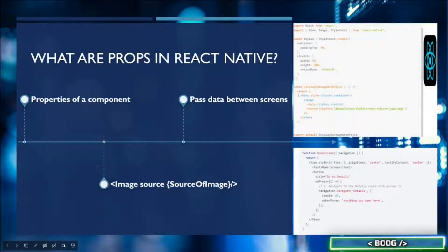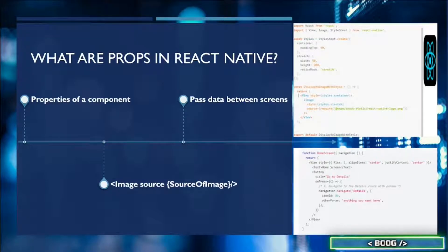What are props in React Native? Most components can be customized when they are created with different parameters. These created parameters are called props, which is short for properties. For example, the React Native image component has a source property. When we use the image, we define the prop called source. Source controls what the image shows — it could be a link or it could be an image saved within the file structure.